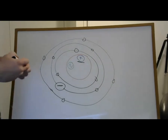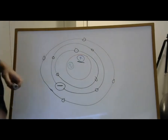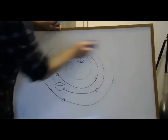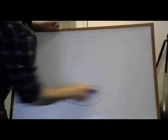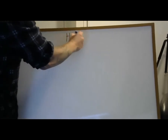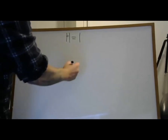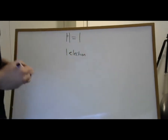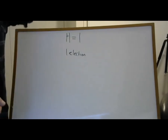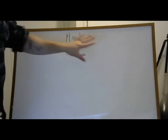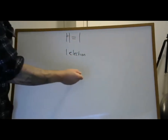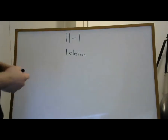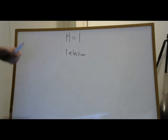The electrons fill these shells from the inside out. For a neutral atom, the number of electrons equals the number of protons. Hydrogen has an atomic number of one, so hydrogen has one electron. You can also tell where that electron will be — not its geographical location exactly, but how close to the nucleus it will be. On the periodic table we have groups and periods.